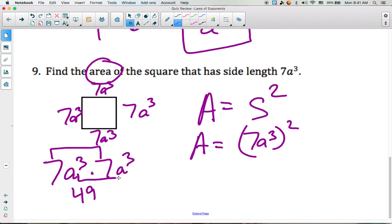a to the third times a to the third, keep your same base, and you add the exponents. 3 plus 3 is 6. So you'll get 49a to the sixth.